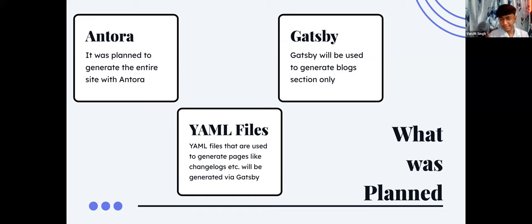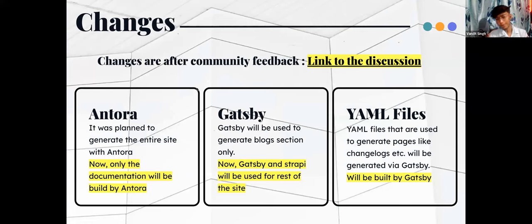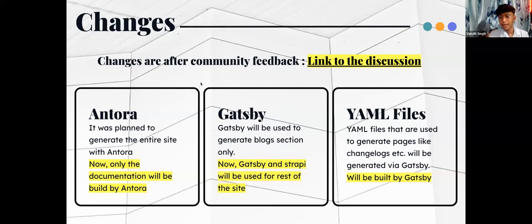What the community suggested and what we're going with is that Antora should only be used for the versioning part — only documentation should be built with it — and Gatsby with Strapi CMS will be used for the rest of the site. Since the entirety of Jenkins.io is essentially documentation, Gatsby still has substantial work to do, but we'll be using Gatsby for the entire site now. The YML files will still be built with Gatsby.